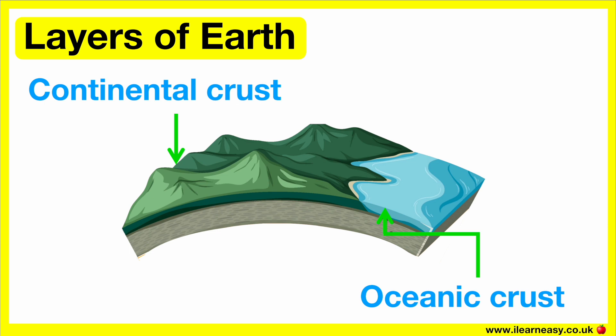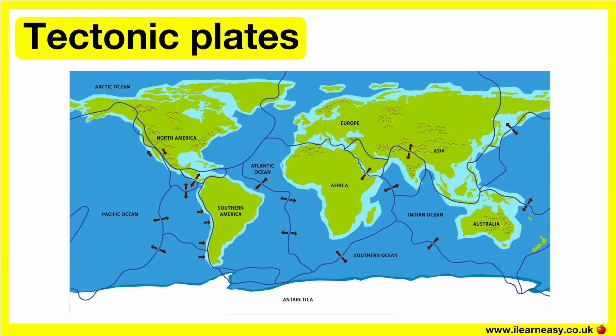The crust is broken into plates like a big jigsaw puzzle. These are known as tectonic plates. These tectonic plates move very slowly, only a few centimeters every year. The earth's crust floats above the next layer, which is called the mantle. The earth's crust only occupies less than 1% of the earth's volume.